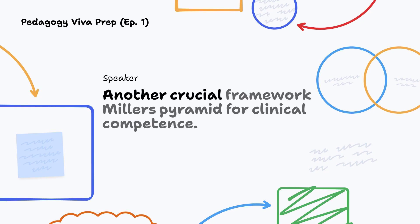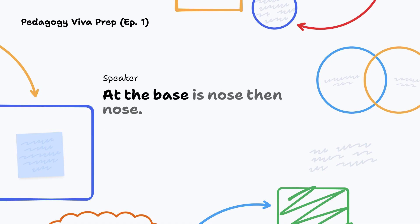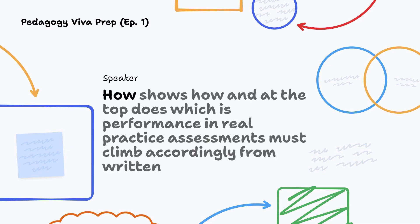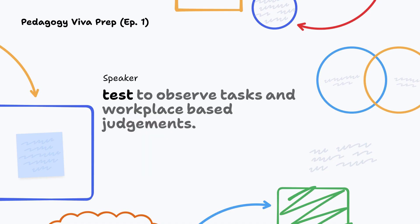Another crucial framework: Miller's Pyramid for Clinical Competence. At the base is 'knows,' then 'knows how,' 'shows how,' and at the top, 'does' — performance in real practice. Assessments must climb accordingly, from written tests to observed tasks and workplace-based judgments.